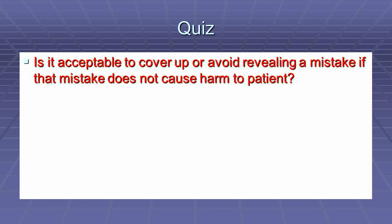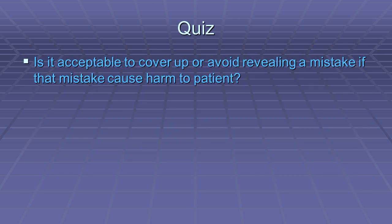Is it acceptable to cover up or avoid revealing a mistake if that mistake does not cause harm to patients? You can choose yes or no. The next question is similar but different in terms of outcome: is it acceptable to cover up or avoid revealing a mistake if that mistake causes harm to patients? You can choose yes, no, or maybe it depends. The two questions are similar — people made a mistake, the behavior is the same — but the difference is the outcome. One is where the mistake causes harm; the other is where it doesn't.